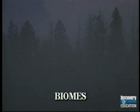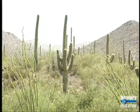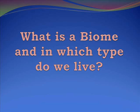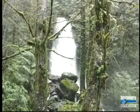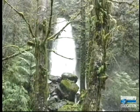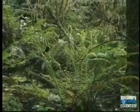Usually ecologists and biologists study biomes. Biomes are areas of characteristic climates and vegetation. Examples of biomes would be the Arizona desert. What is a biome and in which type do we live? And the temperate rainforests of the Washington coast, which have mild temperatures and high levels of precipitation.